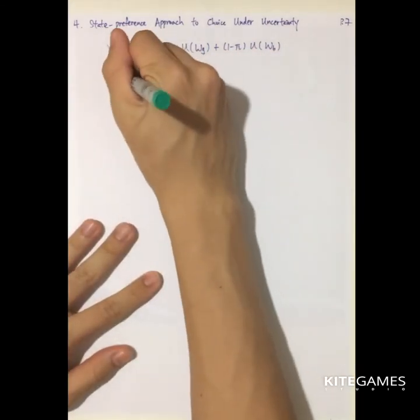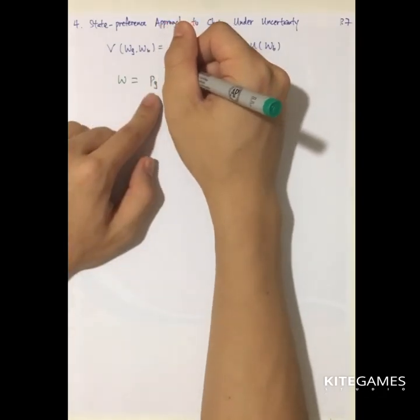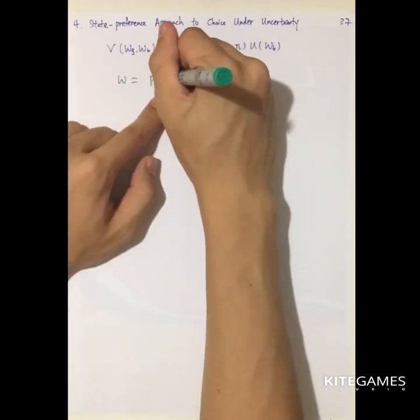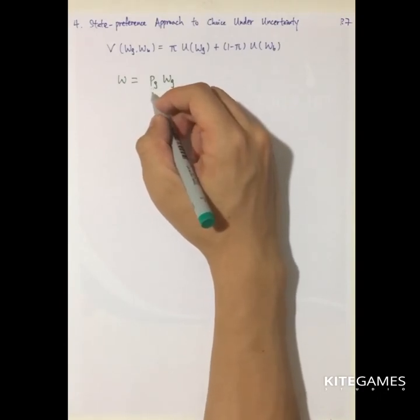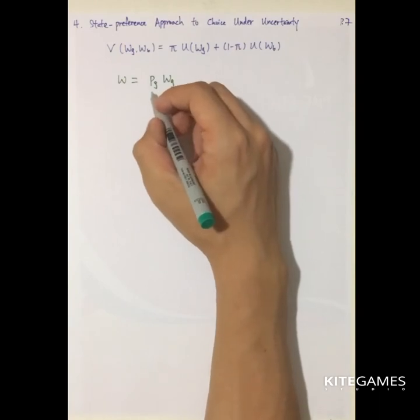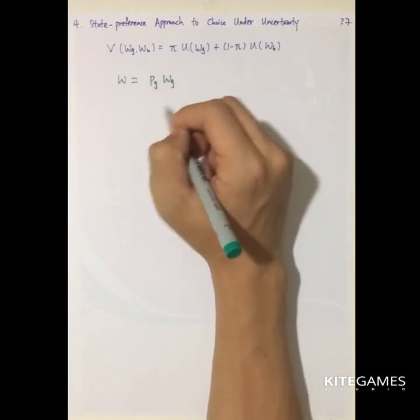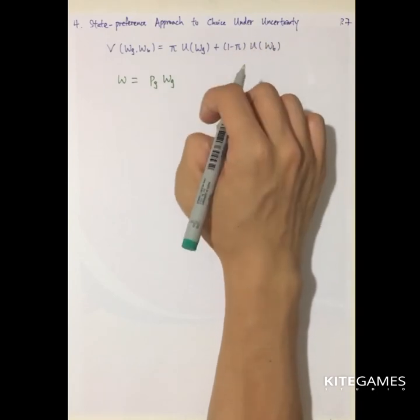So the budget constraint here, wealth is equal to PG. PG times WG. PG is the amount you pay that it gives you one unit of wealth if finally the state is good. So you know at the tomorrow, you only have two states, good or bad.